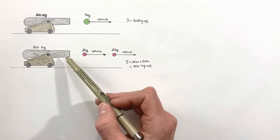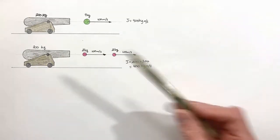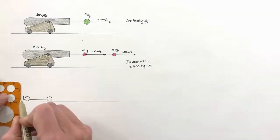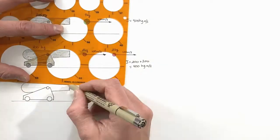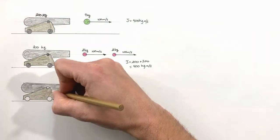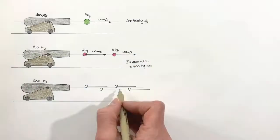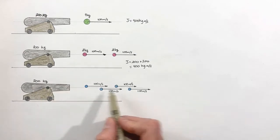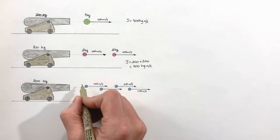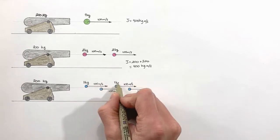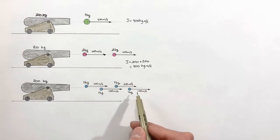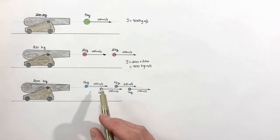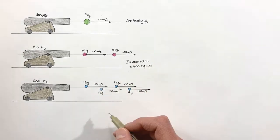We can go a step farther. Let's say this cannon fires four one-kilogram cannonballs — 200 kilogram cannon firing four individual one kilogram cannonballs. What we'll see again is the total impulse given to all of the cannonballs is 400 kilogram meters per second.